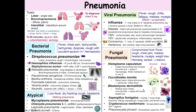Blastomyces dermatitidis is generally a more serious form of fungal pneumonia, associated with rotting wood or rotting vegetation. You inhale the microconidia, which are on short conidiophores normally attached to hyphae. They make their way into the lungs and convert into a yeast form. These are big yeast with a big thick wall and broad-based budding, which differentiates them from all other yeasts. Disseminated infection tends to cause skin lesions that mimic squamous cell carcinoma, or bone lesions.